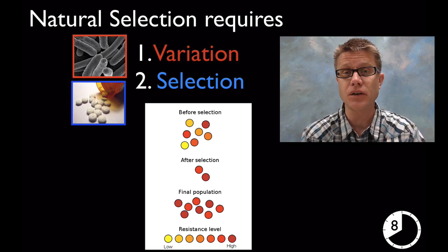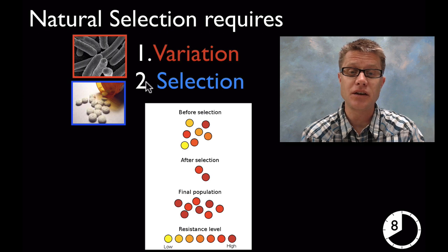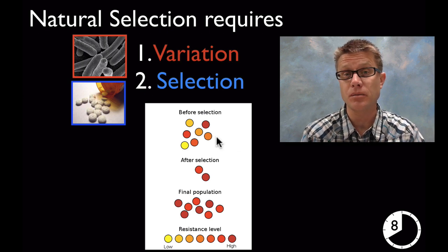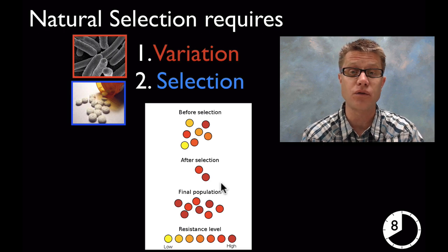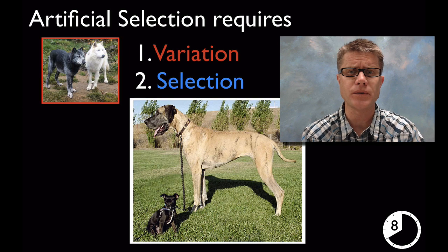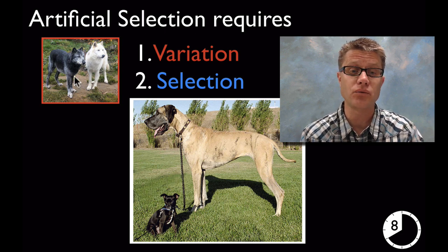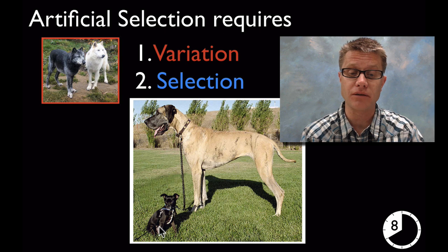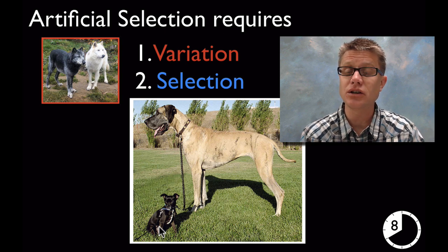Moving into middle school, you really want to talk specifically about the two parts of natural selection: variation in the population — like we saw in the peppered moths or in bacteria — and a selection process where something in the environment is selecting for or against individuals. When Darwin explained this to people, he started not with nature but with artificial selection. Artificial selection is when you have variation in a population, like variation in wolves, and the selective pressure is humans. All the different dog breeds on our planet have been created by humans selecting traits we like and eliminating traits we don't — breeding specific wolves over time created all the dog breeds we have.